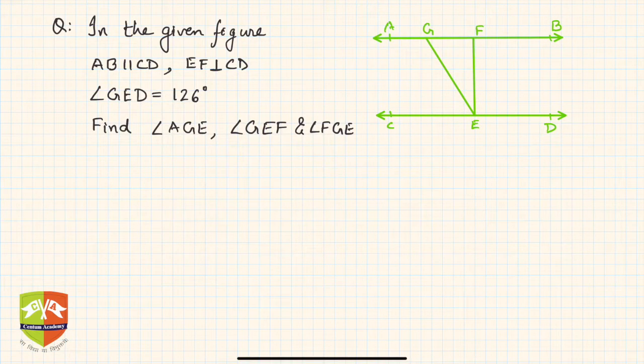In this question, it's given that AB is parallel to CD, so these two lines are parallel. EF is perpendicular to CD, so this angle is 90 degrees. And angle GED is 126 degrees.